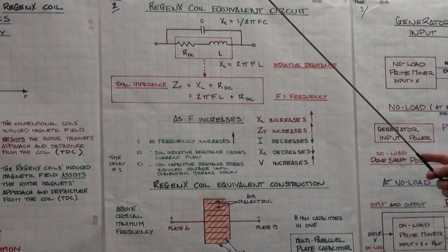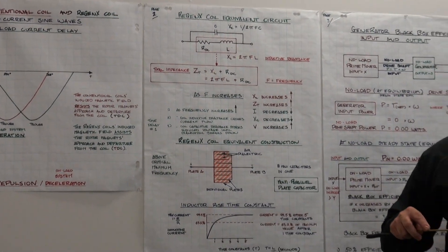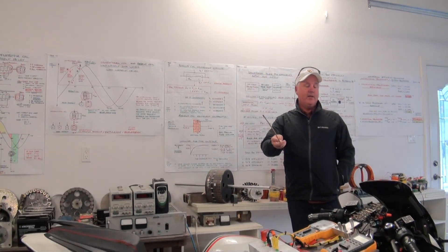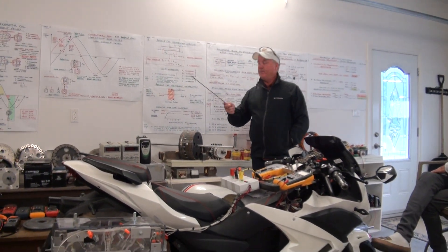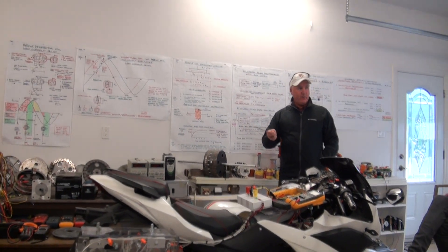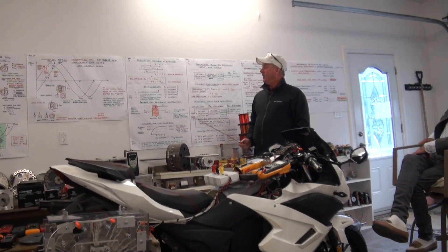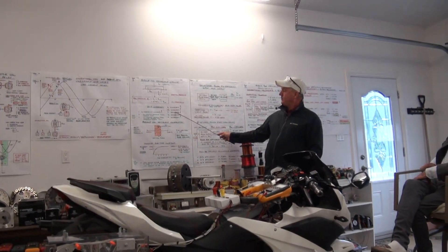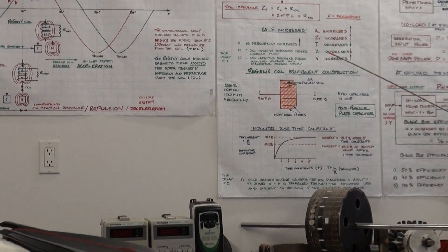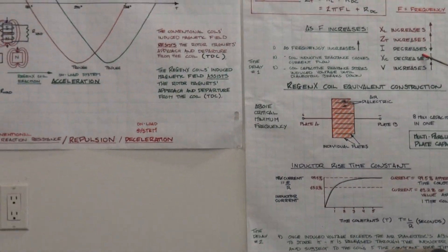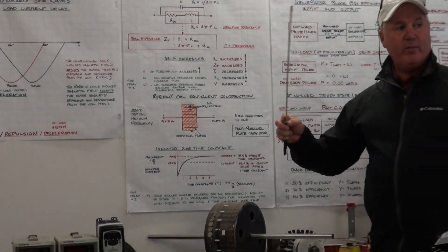The coil operates less and less like an inductor, because an inductor needs current flow to establish the magnetic field. That's what you felt — when the current was flowing, the magnetic field around the coil was maximum. As the frequency increases, ZT goes up, current goes down, capacitive reactance goes down. The coil operates less and less like an inductor and more and more like a capacitor.